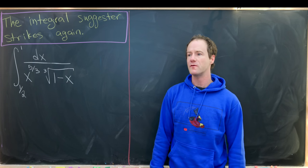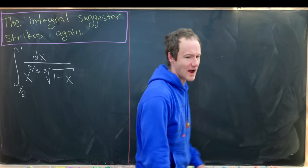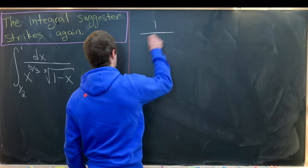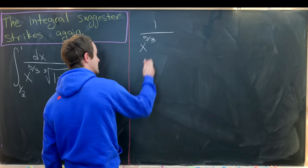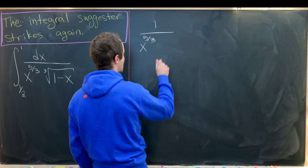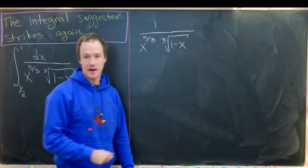And in order to motivate the substitution that we use, I want to take the integrand and rewrite it a little bit. So let's take that integrand. That's the fancy word for the function that's being integrated. So we've got 1 over x to the 5 thirds times the cube root of 1 minus x.